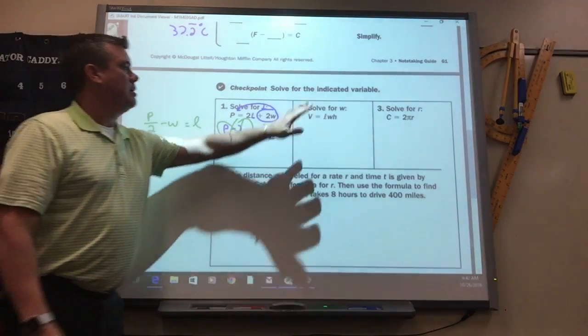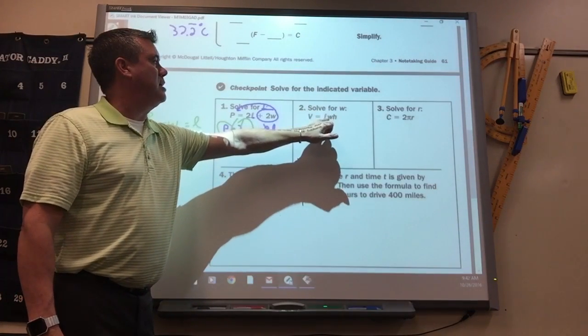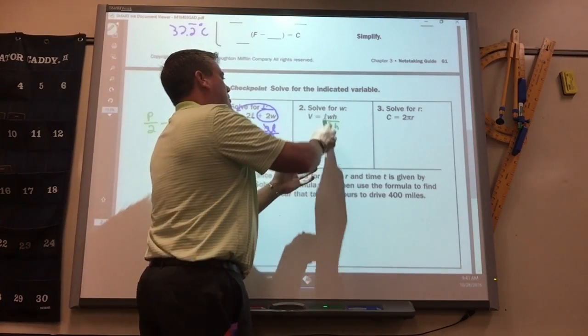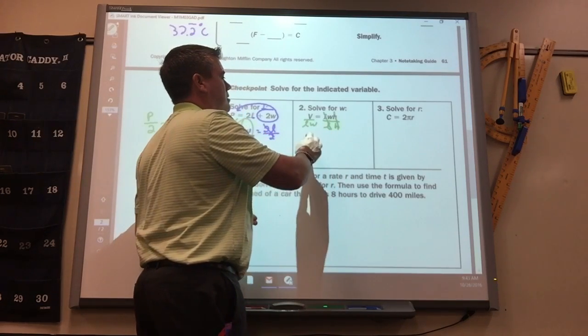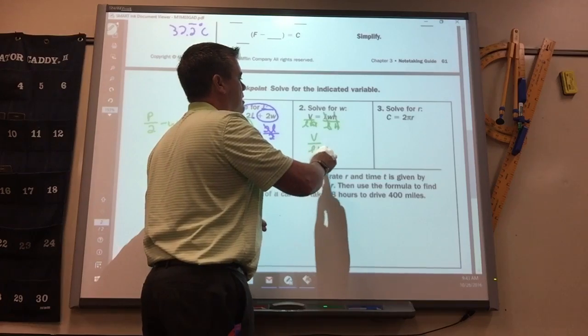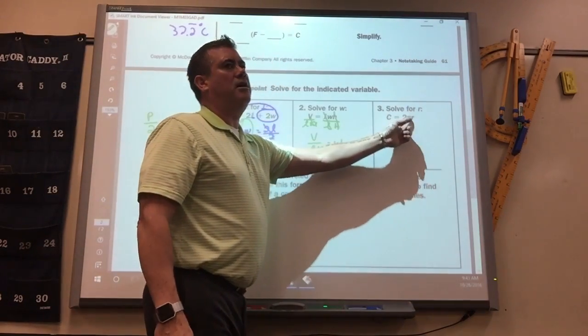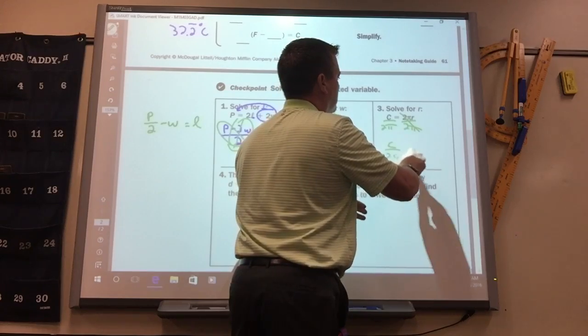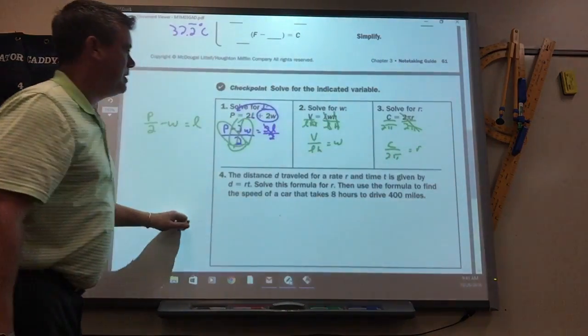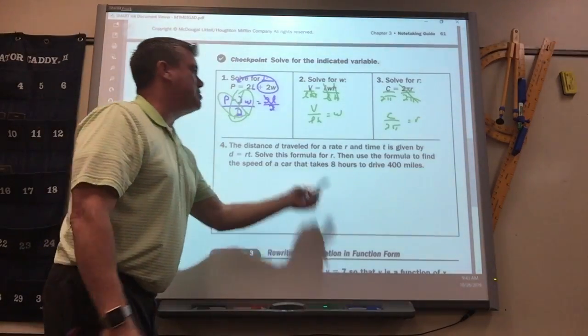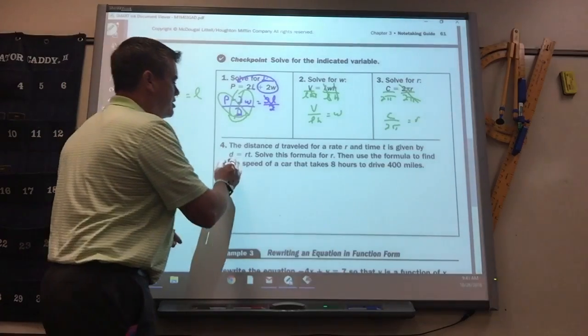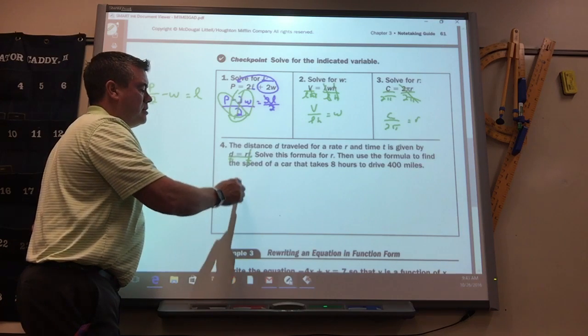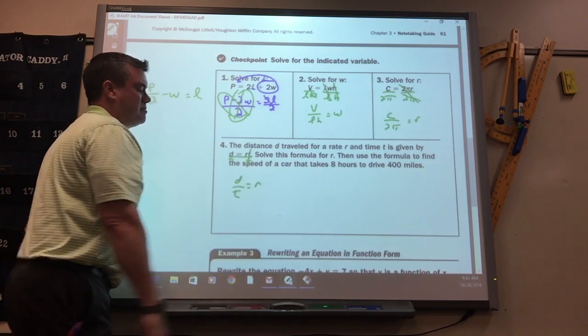You don't have to. Simple one here. Everyone better be able to do this one. What do you do to get the W by itself? Divide by LH. They're all multiplied together. So that would cancel. That would cancel. And you're done. V over LH equals W. Another simple one to solve for R. They're all multiplied. Divide by 2 pi. And you're done. Distance formula they use a lot. Distance is rate times time. Solve for R. In order to get R by itself, you just have to divide by T. So distance divided by time is rate.